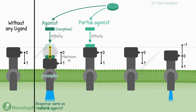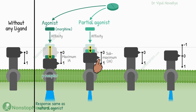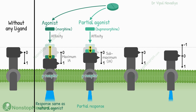A partial agonist has affinity but submaximal intrinsic activity — it activates the receptor, but not fully, only partially. Intrinsic activity is between zero and one, so the response is also partial. For example, buprenorphine is a partial agonist at the mu opioid receptor. It is worth noting that if an agonist is also present, the partial agonist prevents its action — as long as the partial agonist occupies the receptor, the agonist cannot act. Although buprenorphine has partial action, it prevents the full action of morphine on this receptor.